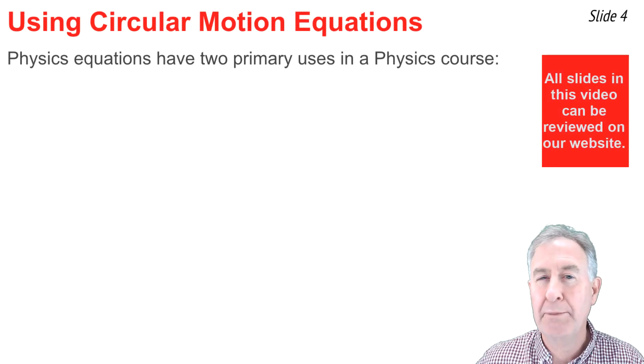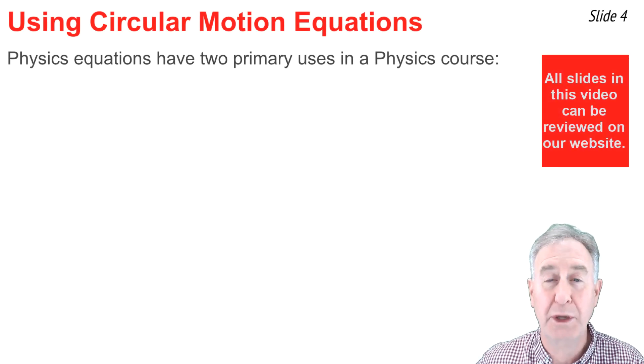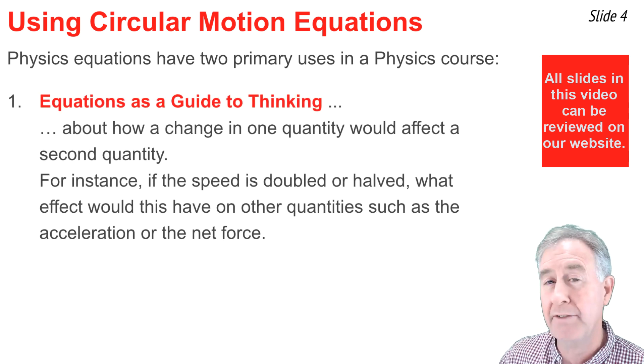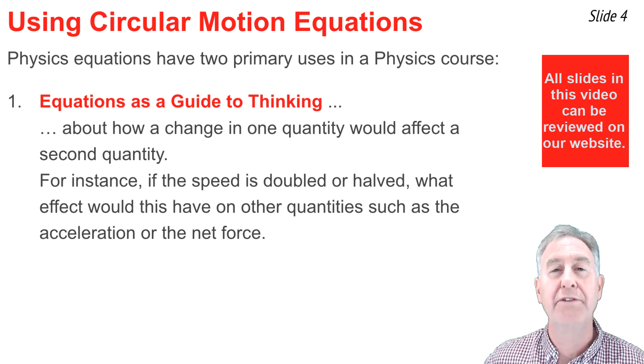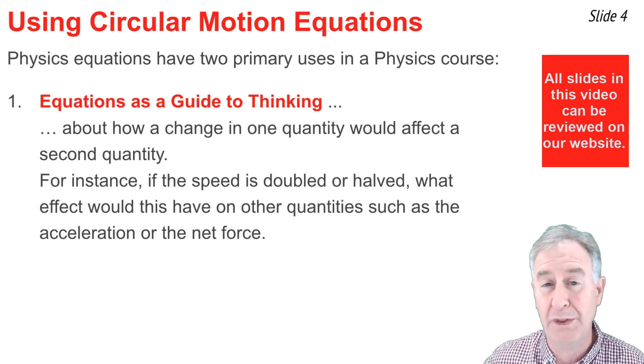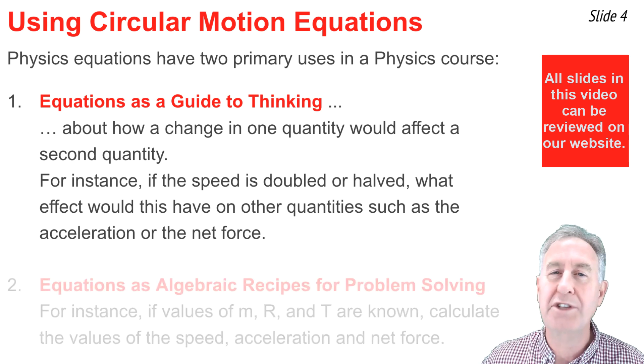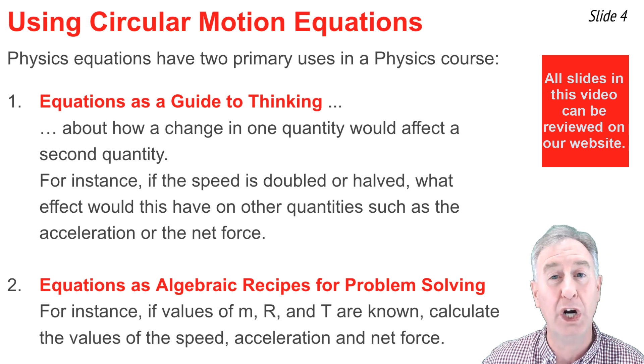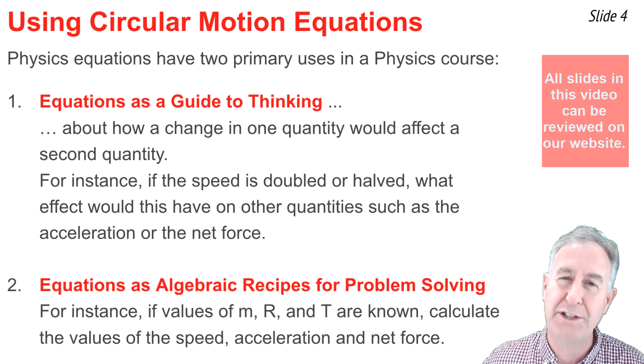In a typical physics course, there are typically two types of ways to use an equation. The first type is to use the equation as a guide to thinking about how a change in one variable might affect the value of another variable. For instance, if the speed is doubled or tripled or halved or quadrupled, how would that affect the acceleration or the net force? The second means of using an equation is to use it as a sort of recipe for algebraic problem solving. For instance, you might be given values of m, r, and period, and asked to calculate the values of speed, acceleration, and net force.